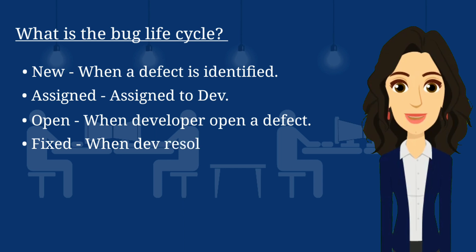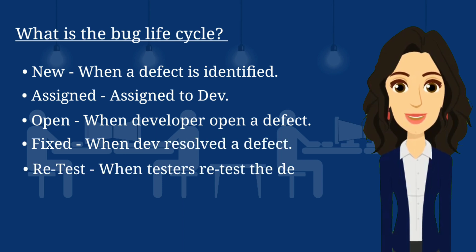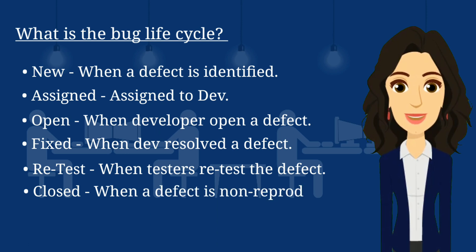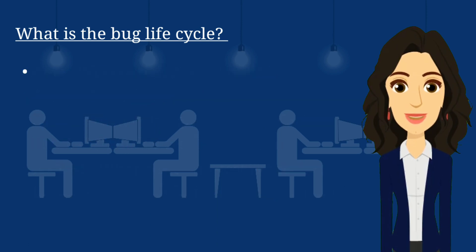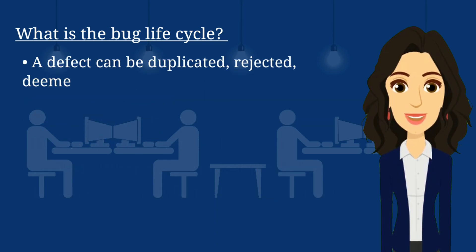Fixed — when the developer resolves the defect. Retest — when the tester retests the defect. Closed — when a defect is non-reproducible. A defect can also be marked as Duplicated, Rejected, deemed not to be a bug, or Deferred.